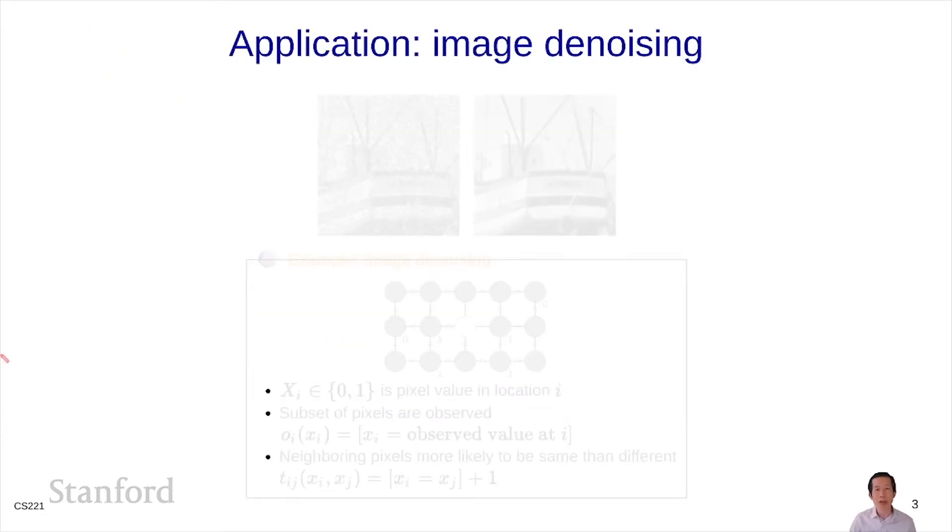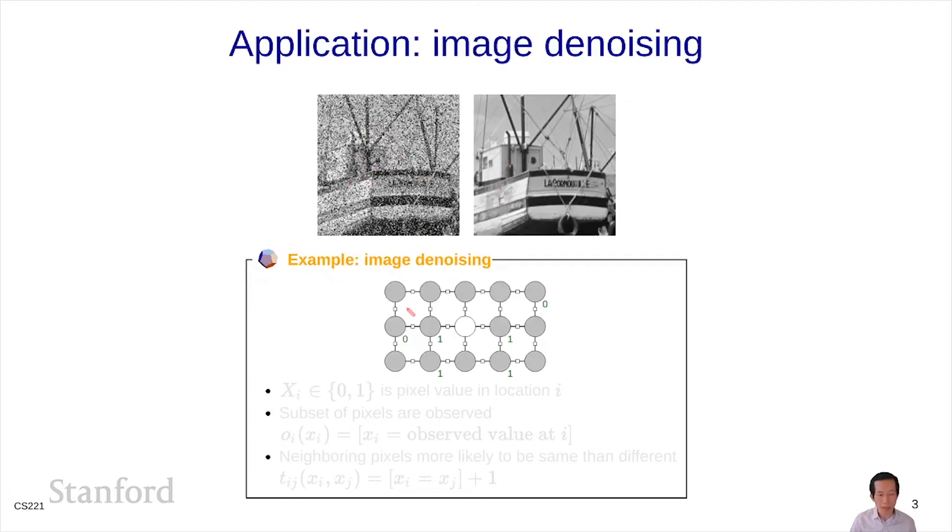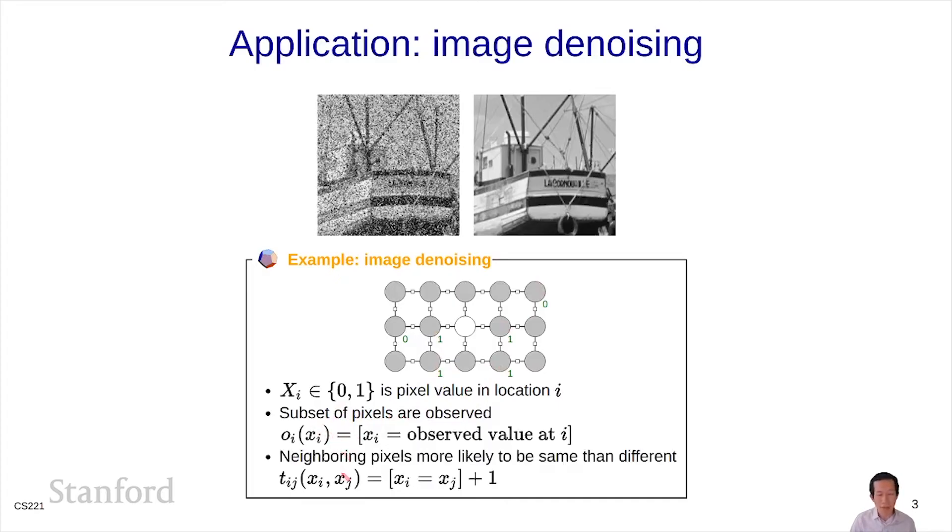Let me now go to the image denoising example. Here, the goal is, if you're given a noisy image, clean it up. In our simplified version, I have xi, which represents the clean pixel value, which I don't know. A subset of the pixels are observed, these in green here. I'm going to clamp those pixel values to the observed value. Then I have a factor that says neighboring pixels are twice as likely to be the same than different.